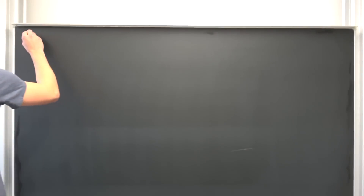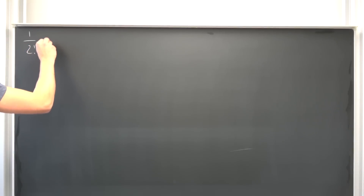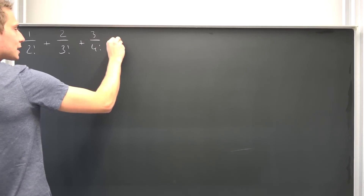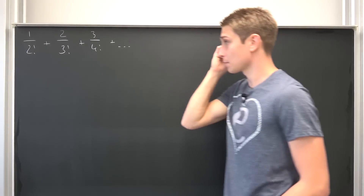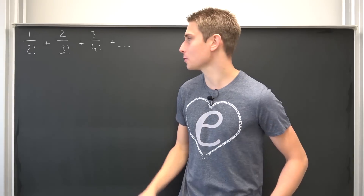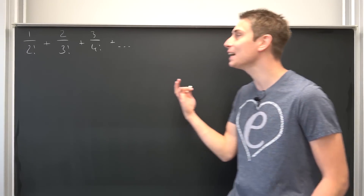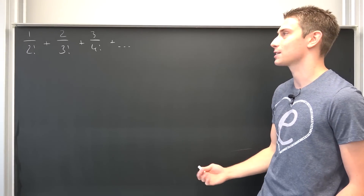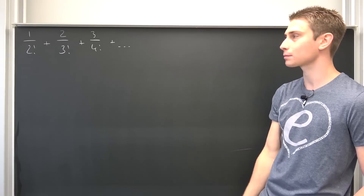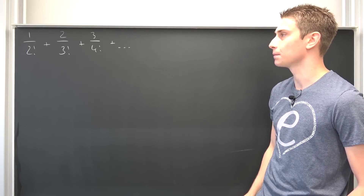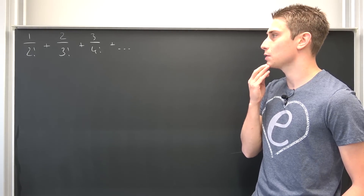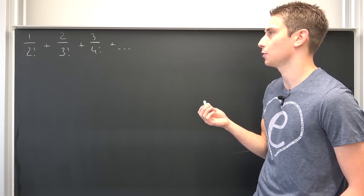This one actually looks like this: 1 over 2 factorial, plus 2 over 3 factorial, plus 3 over 4 factorial — and I guess you can see the pattern. We now have to find the value. I actually equipped myself with an E t-shirt, because it looks something like E. It really has similarities to E — we have those parts with reciprocals of factorials added together. So let us put this into an explicit formula and see if we can get something out of this.